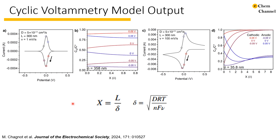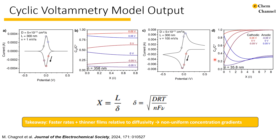Here we have example voltammograms determined using similar parameters with the exception of scan rate. On the left, we have a slow scan rate of 1 mV/s, and on the right a relatively fast scan rate of 100 mV/s. One advantage of using a digital simulation is that at any point during the voltammogram, we can extract the concentration profile and compare it. The slower scan rate results in a much more uniform concentration profile, whereas the faster scan rate perturbs the film more rapidly, allowing less time for diffusion to even out the concentration across the film.